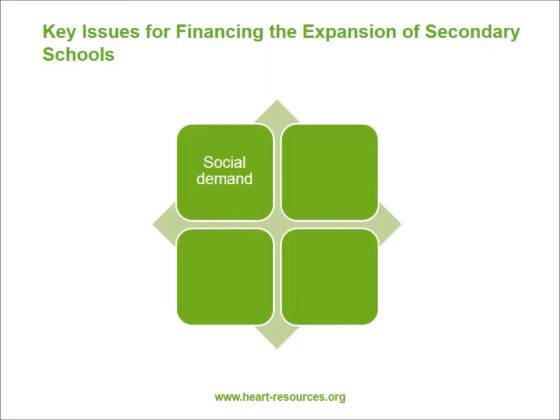Greetings. This session is about four different approaches to planning which are relevant to the problems of expanding secondary schooling in Africa and in South Asia. Let me start by introducing four different ways of thinking about the problem — how to decide how many schools, how many school places to provide, where to provide them, and what should happen within them. The four approaches can be characterised as being driven by social demand, rates of return, projections of the labour force, and lastly a kind of indicative planning very familiar in highly centralised states. Let's take each in turn and see what they consist of and what some of the problems might be.